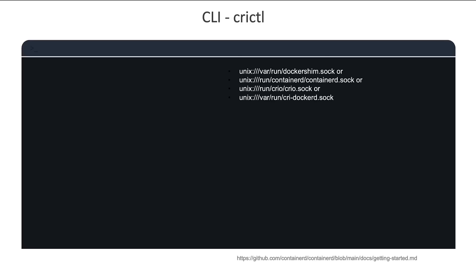Since crictl can be used to connect to any CRI-compatible runtime, remember to set the right endpoint if you have multiple container runtimes configured or if you want crictl to interact with a specific runtime. If you haven't configured anything by default, it's going to connect to sockets in this order: docker shim first, then ContainerD, then CRI-O, then CRI-dockerd. If you want to override that, you use the --runtime-endpoint option with the crictl command line, or set the CONTAINER_RUNTIME_ENDPOINT environment variable to the right endpoint.